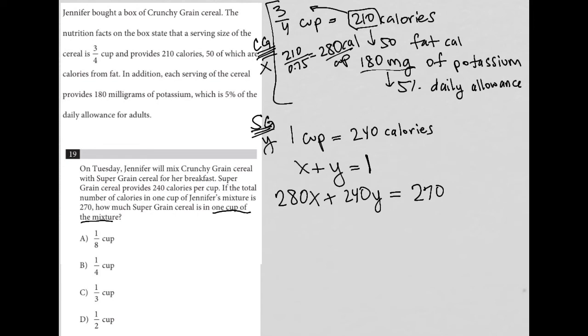The question is asking for how much super grain. Again, we said super grain is equal to Y. So in essence, we're just solving for Y, which means I'm going to take this first equation and I'm going to solve for X by subtracting Y from both sides of the equation. By doing that, I'd have X equals 1 minus Y. My reason for doing that is to use a method called substitution, which is a method that is used when you are dealing with a system of equations.